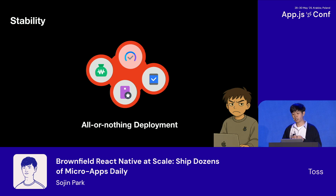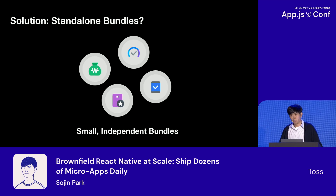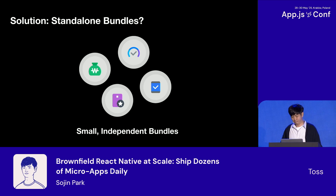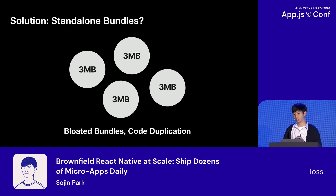With everything in one bundle, we faced an all-or-nothing deployment scenario — one bug in any service meant either rolling back the entire app or letting users suffer through those errors. The straightforward solution would be to split these bundles into smaller standalone bundles, but for us simply splitting the bundles was not enough. Each bundle still included React, React Native, and native modules, resulting in more than three megabytes per service. Including hundreds of microservices meant 300 or more megabytes of app size, which was not practical.